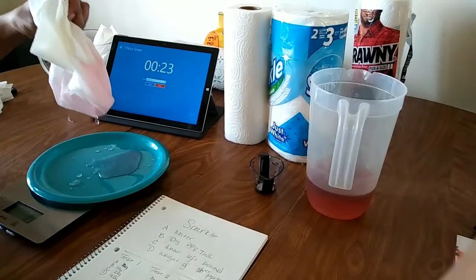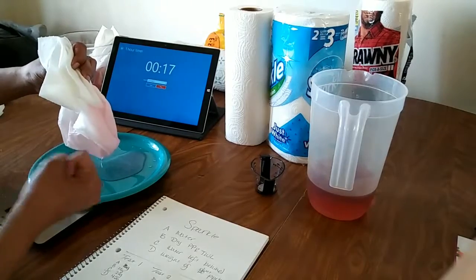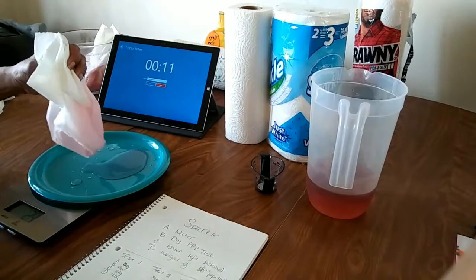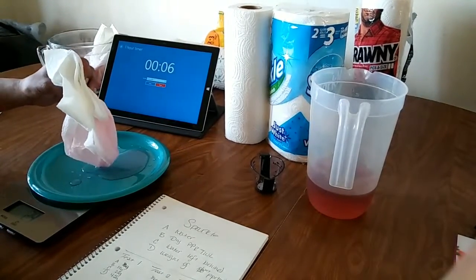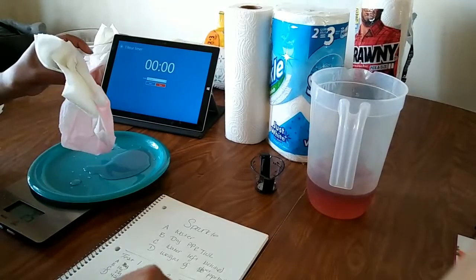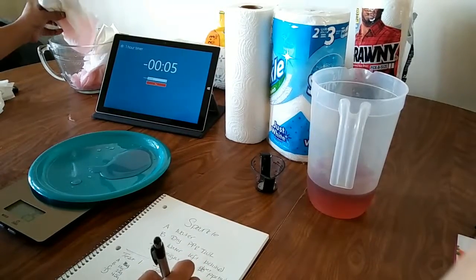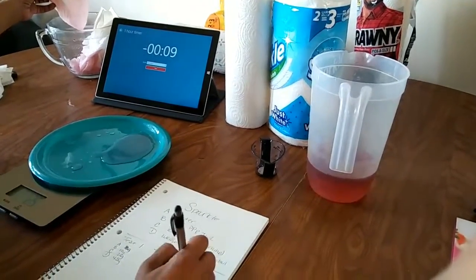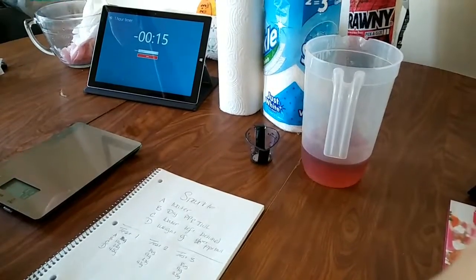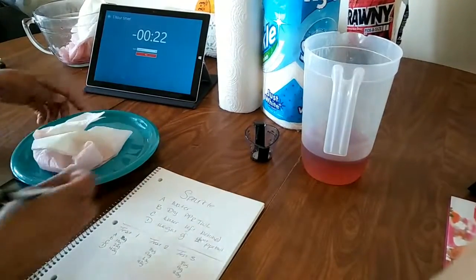Again, the reason that we're not squeezing the paper towel, we're just letting it drip, is because we have no way of measuring how tight my grip would be in order to wring the water from the paper towel. One time it might be harder or softer, and that might create a bias. And that's not what this test is about. Okay. So there we go. We'll go ahead and move that over. This is 25 grams of water left behind on the plate. Now we're gonna take this water and remove it from the plate.